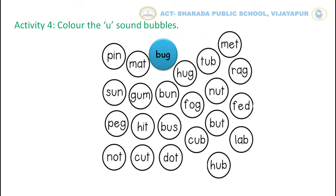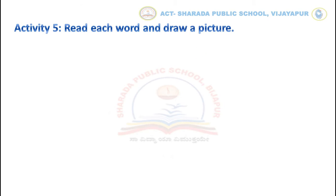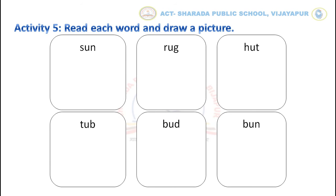Ok children, let us move to the next activity: read each word and draw a picture. Kids, in this activity first read these words and then draw a picture. For example, rug.